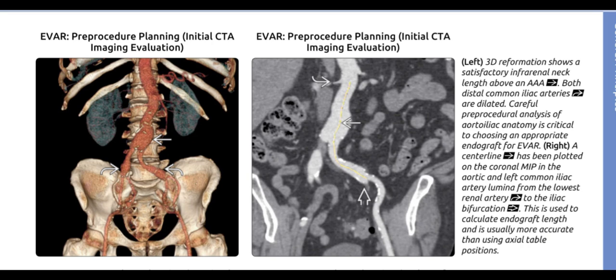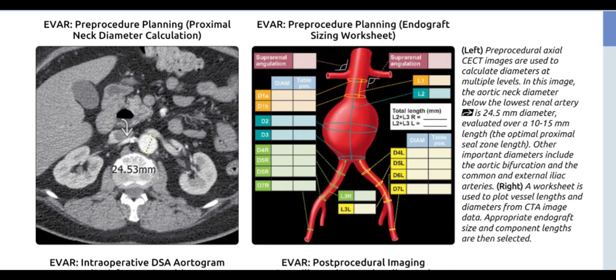Deformation shows a satisfactory infrarenal neck length above a triple-A stent; both distal common iliac arteries are dilated. Careful pre-procedural analysis of aortoiliac anatomy is critical to choosing an appropriate endograft for EVAR. A centerline has been plotted on the coronal MIP in the aortic and left common iliac artery lumina from the lowest renal artery to the iliac bifurcation, used to calculate endograft length and usually more accurate than axial table positions. Pre-procedural axial CECT images calculate the aortic neck diameter below the lowest renal artery at 24.5 mm, evaluated over a 10–15 mm length.